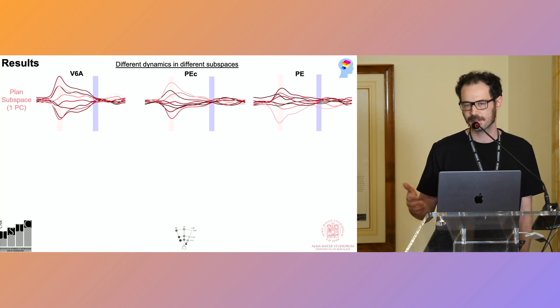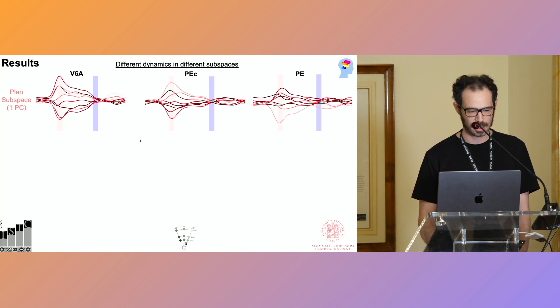Each line represents the neural dynamics for a different target. So nine lines. And as I already said, in the plan subspace, basically we have an activation only during the planning of the movement and a weak activation during the movement phase in all the areas.